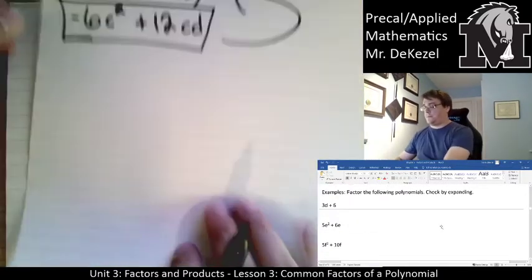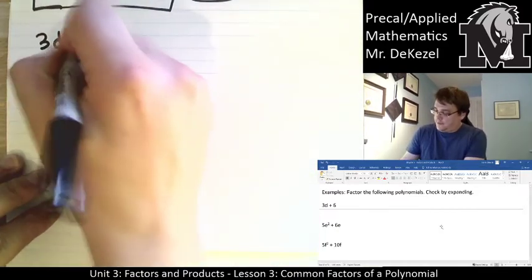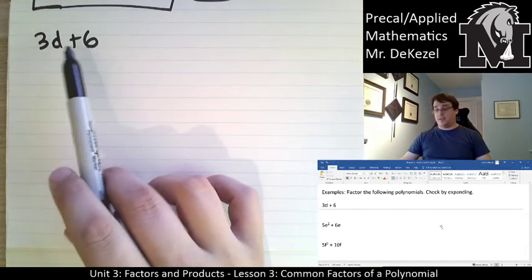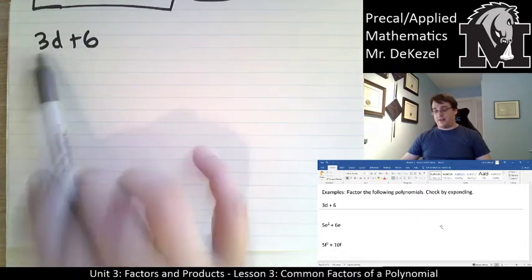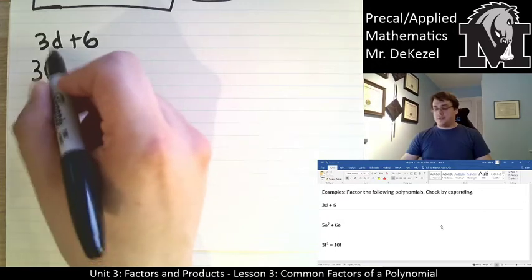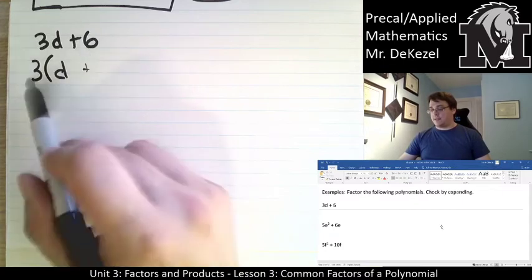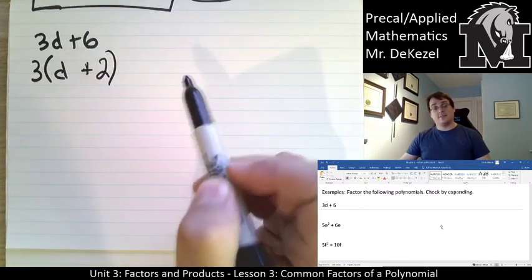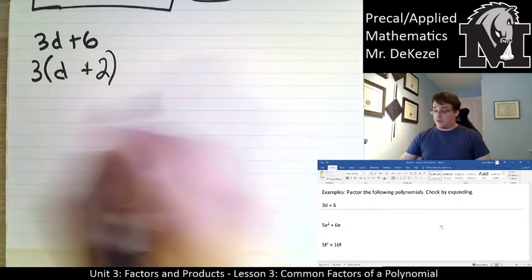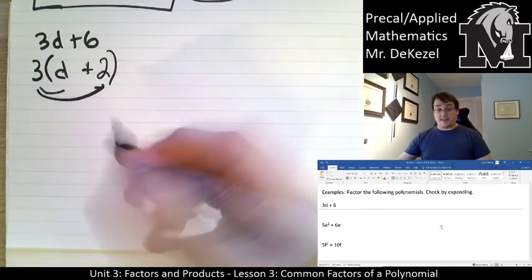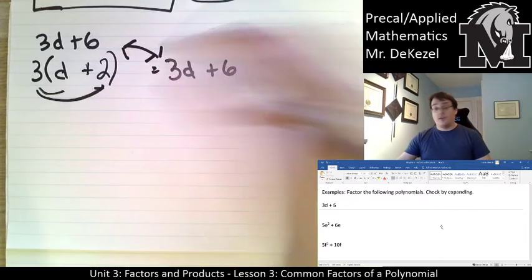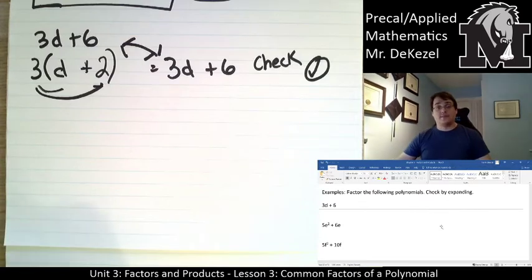Let's factor 3d plus 6. We look for a common factor between these two parts in this binomial. I see that 3 can be divided out of both parts, so I write this as 3 times (d plus 2). What times 3 gets me 3d? Just d. What times 3 gets me 6? That's 2. To check, we expand: 3 times d equals 3d, and 3 times 2 is 6. Those match, so our factoring is correct.